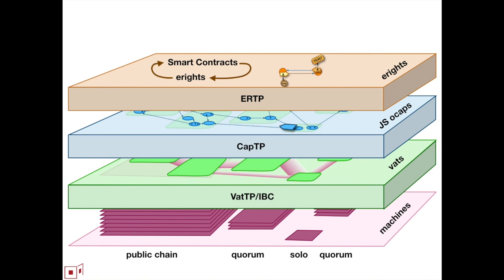These are the three protocol layers of the system. This is what we've been calling VATTP, which we're trying to reconcile with IBC. On top of that we build CAPTP. CAPTP builds capabilities out of VATs; VATTP builds VATs out of machines; and ERTP builds rights and smart contracting out of capabilities. VATs are like eruptive modules, but we don't really run IBC between modules.